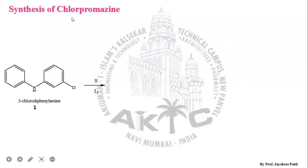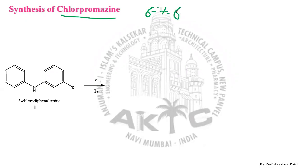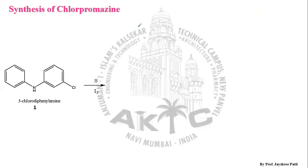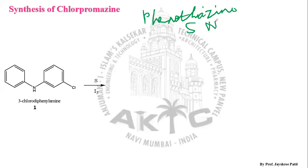Today we are going to discuss the synthesis of chlorpromazine, which is a drug used in psychosis and comes under antipsychotic agents. In tricyclic antidepressants, the parent pharmacophore pattern is 6-7-6, whereas in antipsychotics most drugs follow the pattern 6-6-6, meaning the central ring has six carbons. Chlorpromazine is the representative drug from the phenothiazine category, where 'thia' means sulfur and 'aza' means nitrogen.